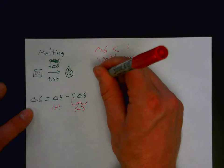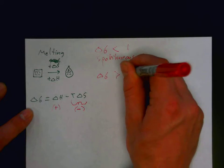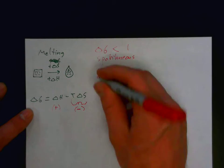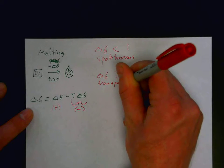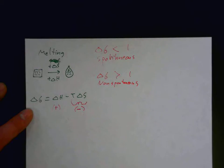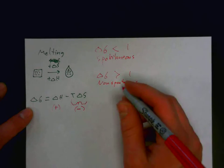And then if delta G is greater than zero, that would be non-spontaneous. And then when delta G is equal to zero, that is equilibrium.